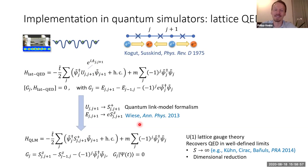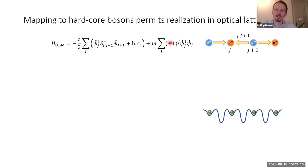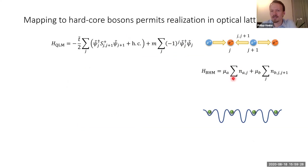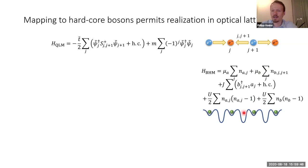We want to implement this U(1) gauge theory in an optical lattice — specifically a bosonic lattice described by the Bose-Hubbard model with different chemical potentials for A and B sites. The A sites represent fermionic matter (shallow sites) and the B sites represent gauge links (deeper sites). We have this bipartite lattice with single particle hopping between neighboring lattice sites and on-site interactions. The question is how to get from this model to the QED lattice Hamiltonian.